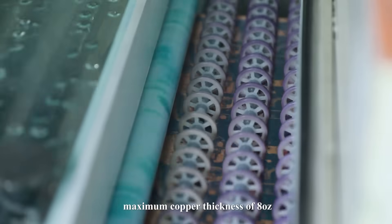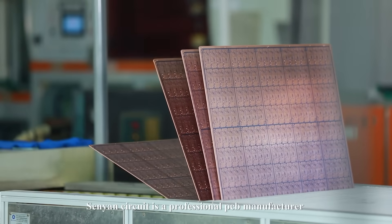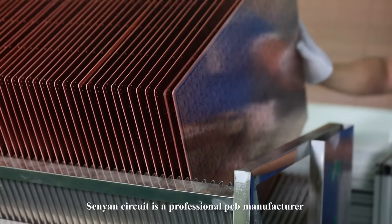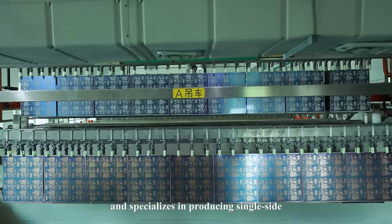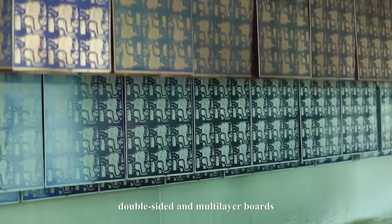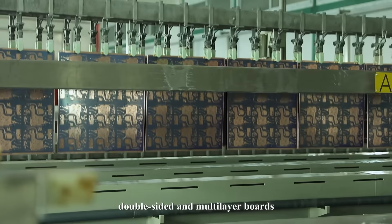We achieve maximum copper thickness of 8 ounces. Senyen Circuit is a professional PCB manufacturer specializing in producing single-layer, double-layer, and multi-layer boards.